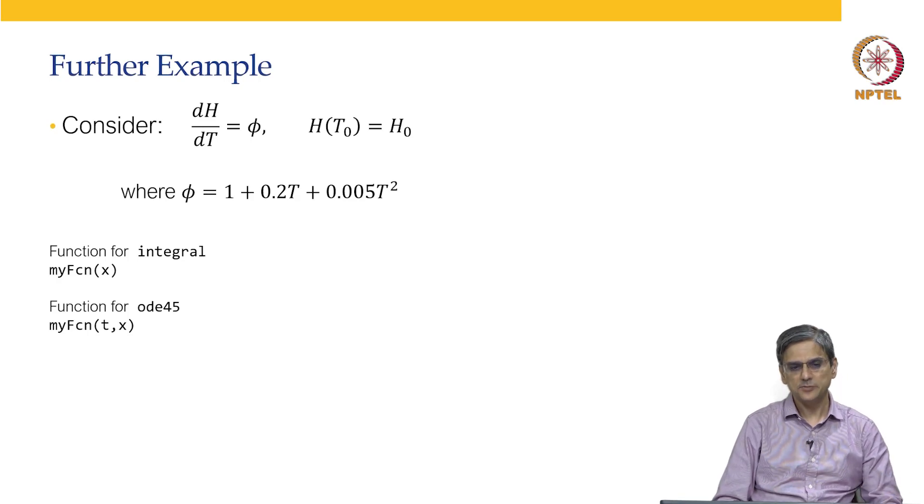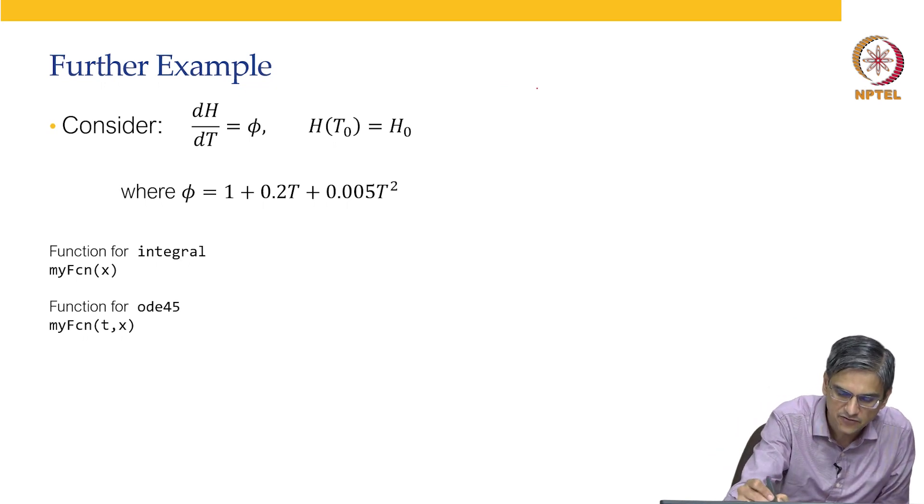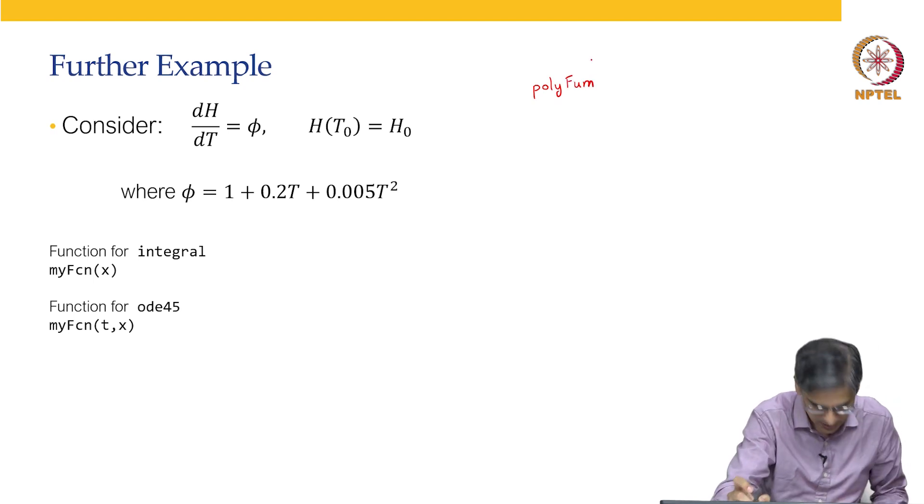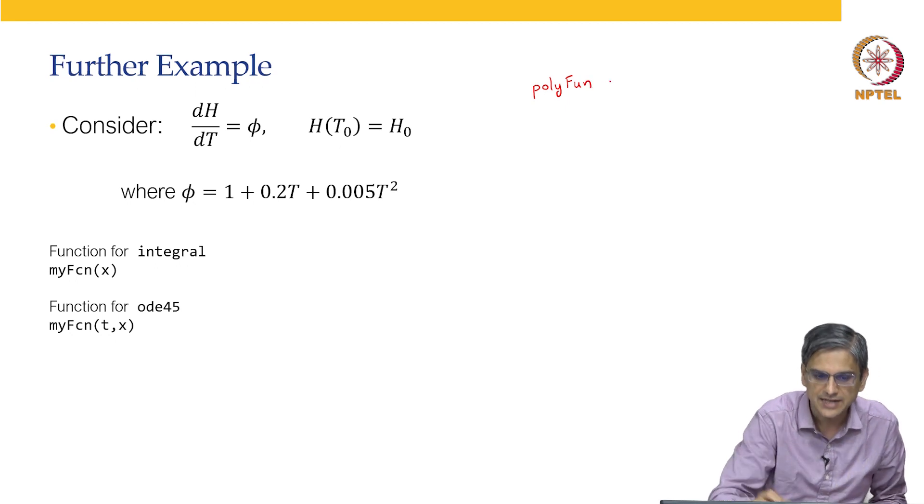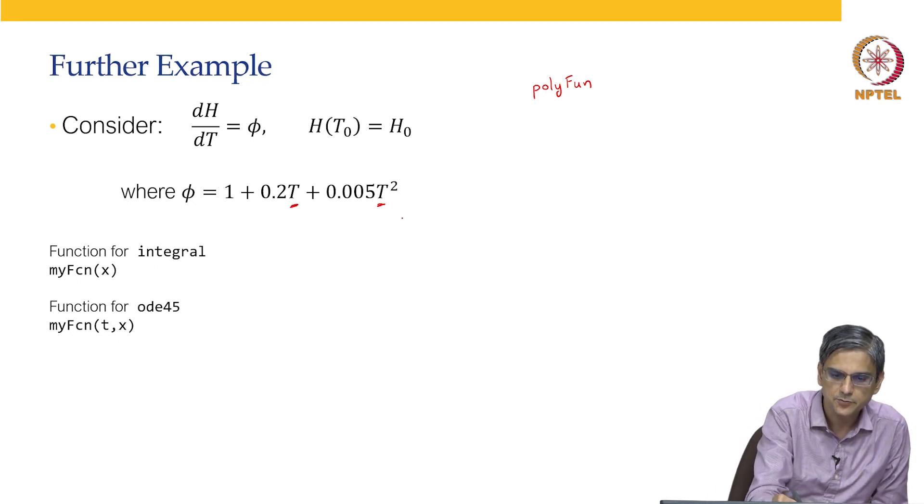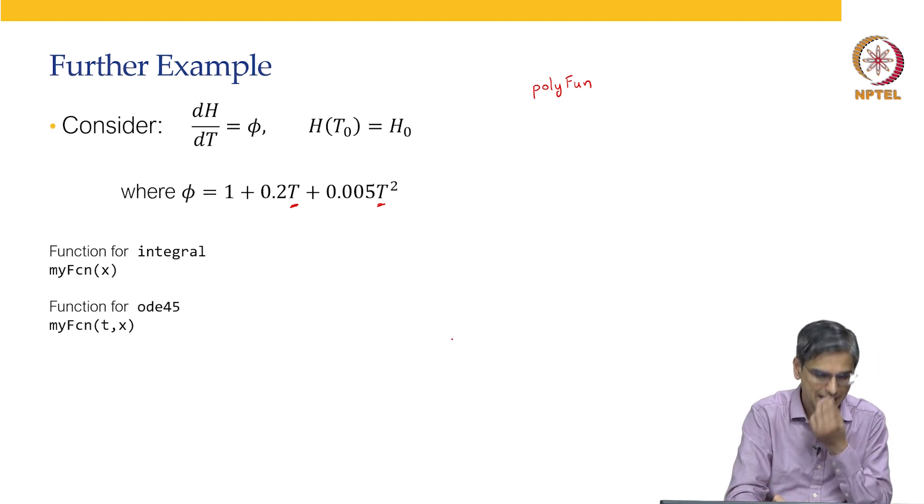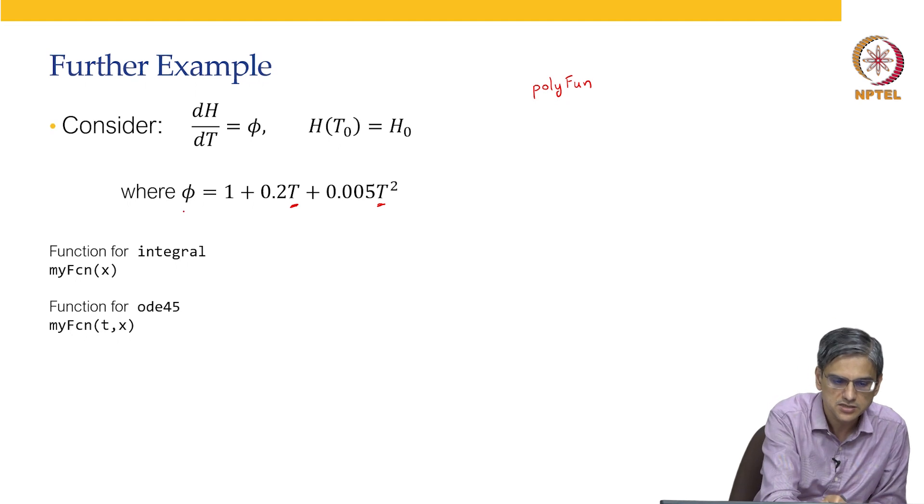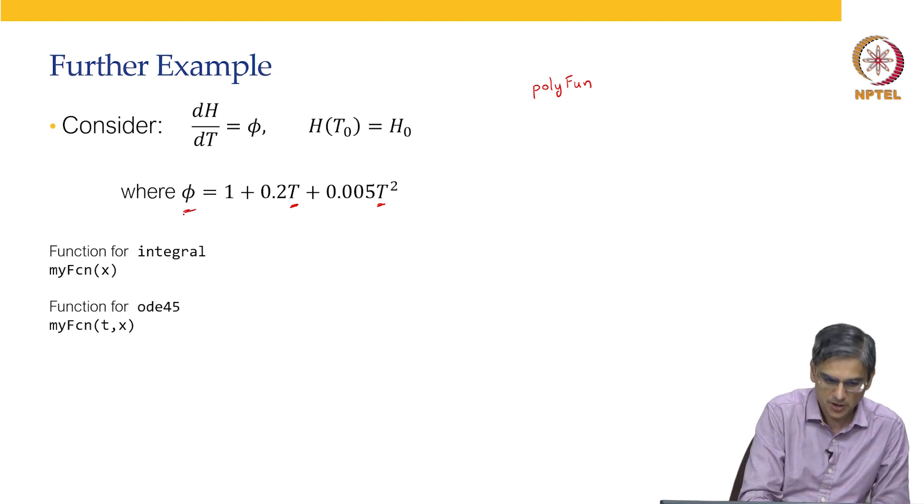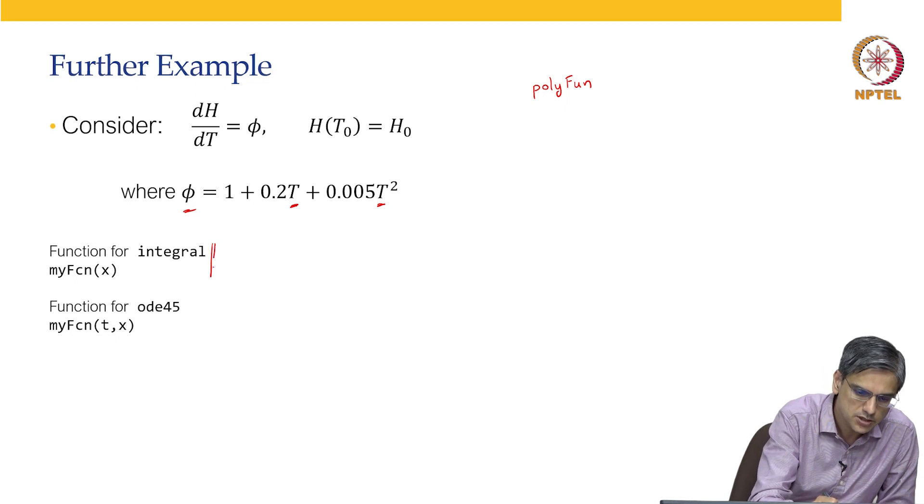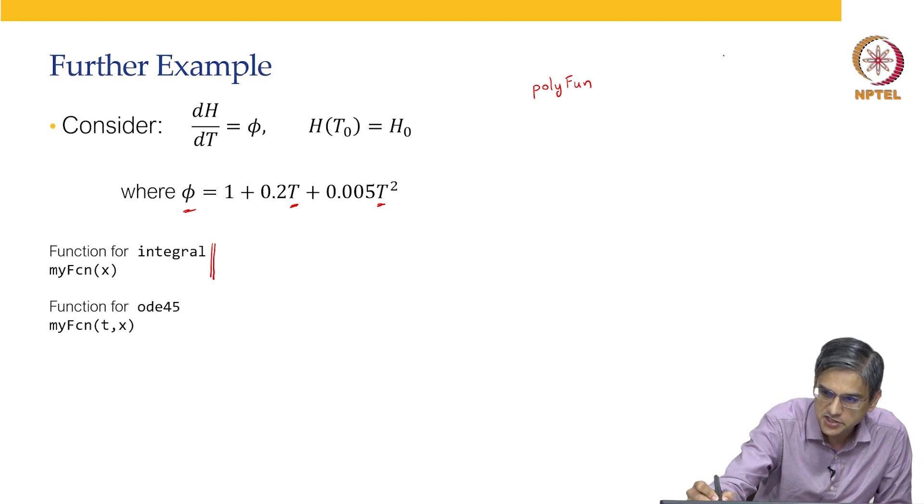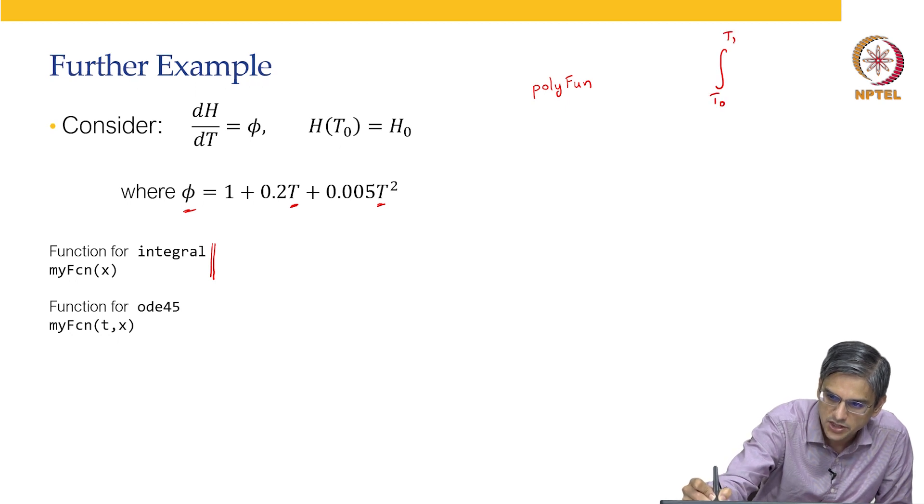Now let us take up another example that shows the flexibility of the anonymous function method that I have shown earlier. Earlier we have defined our function polyfun that takes in t as input argument and param as a structure and returns the value phi. A few minutes earlier what I had shown is how to do numerical integration in which case we were integrating from t0 to t1 phi dt.